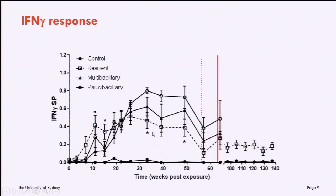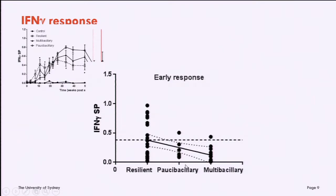Looking at the interferon gamma response, I'm really interested in this early response because I'm looking for an early diagnostic marker. Again, you can see the resilient animals — shown by the squares — have this early kick. Looking at just that early time point and its association with disease at two and a half years, there is a trend that resilient animals have a higher interferon gamma response. In another published trial, the higher the early interferon gamma response, the less likely an animal is to be infected at 12 months.